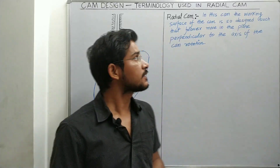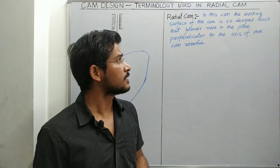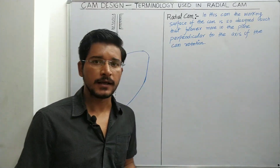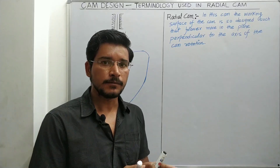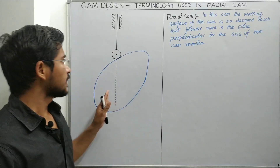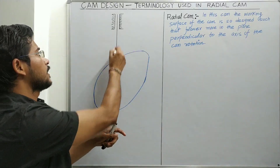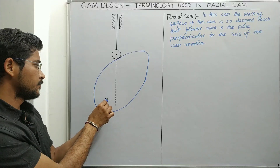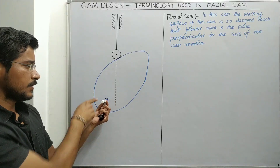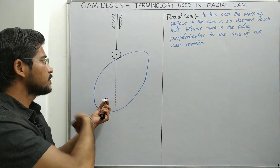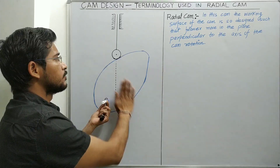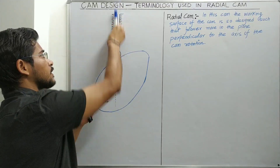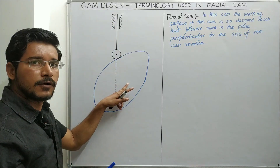What is a radial cam? In this cam, the working surface of the cam is so designed such that the follower moves in the plane perpendicular to the axis of cam rotation. In this diagram, this blue color cam is used with a translating follower or reciprocating follower. The axis of the cam is perpendicular to the whiteboard. The cam rotates about this axis, and the follower reciprocates with up and down motion, so this cam we call a radial cam.